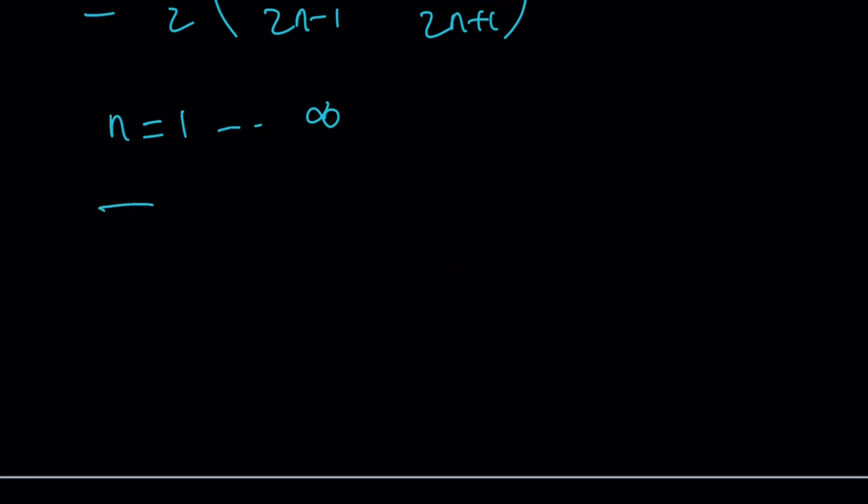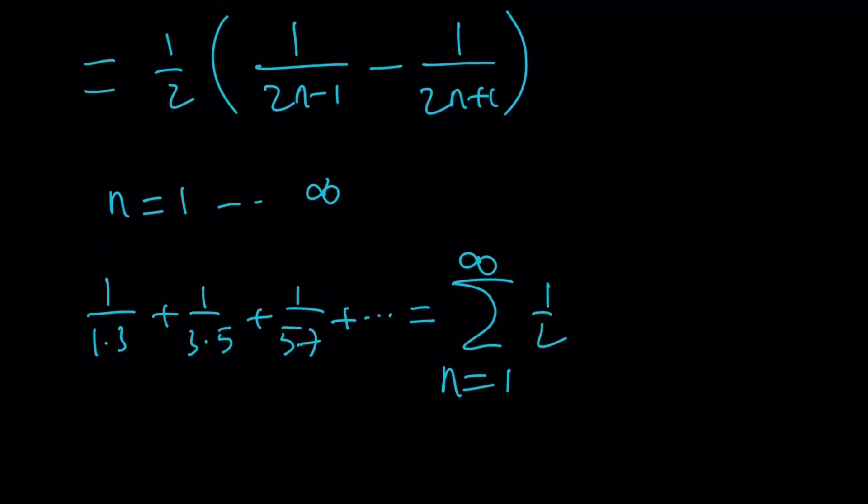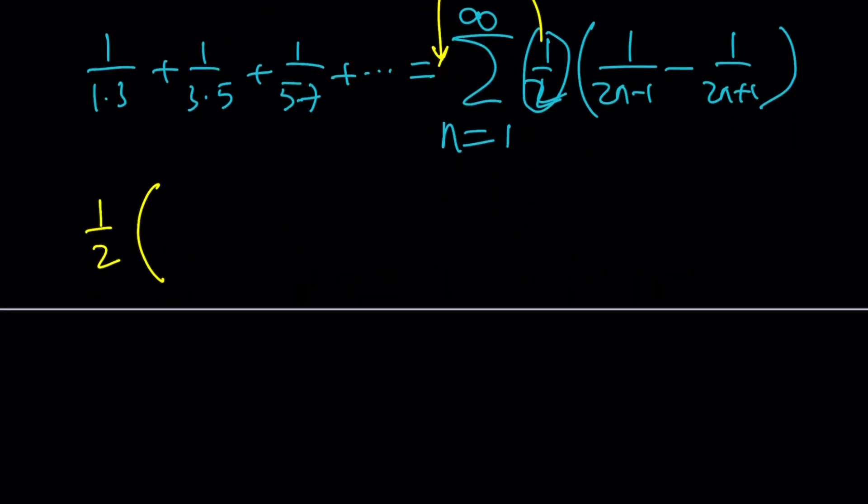Our sum, which was 1 over 1 times 3, plus 1 over 3 times 5, plus 1 over 5 times 7, so on and so forth, all the way to infinity and beyond, like Buzz Lightyear, right? We can write this as sigma n equals 1 to infinity of 1 half times 1 over 2n minus 1, minus 1 over 2n plus 1, because the idea is to add up all these terms for n equals 1, n equals 2, n equals 3, all the way to infinity. And then we're going to evaluate this. But how do you do it? First of all, 1 half you can take out. That's a nice property of sigma, and you don't have to use sigma, by the way. You can just write it this way, too.